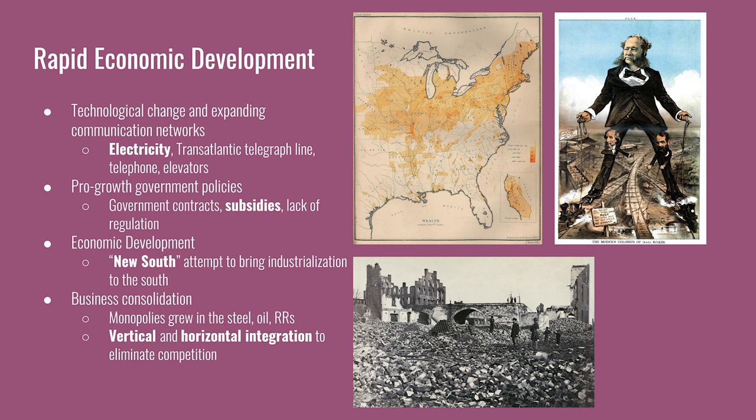Economic development was very widespread in the North, as it is where most of the manufacturing and industrial centers were located after the Civil War. The map on the slide shows the wealth in the United States in 1872. The darker yellow areas are more wealthy and the lighter areas are less wealthy. The South was still struggling during and after the Civil War and Reconstruction. There were proponents for a New South to bring it into this industrialization age, but it didn't quite work.